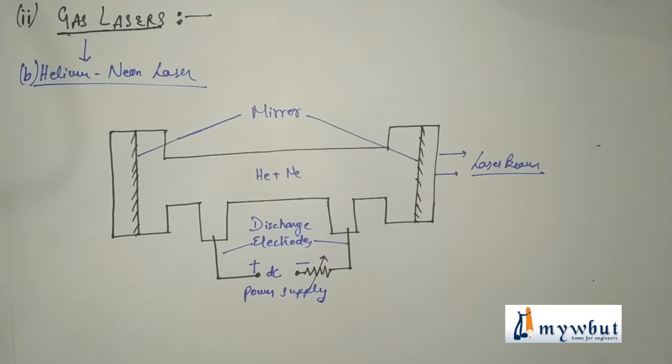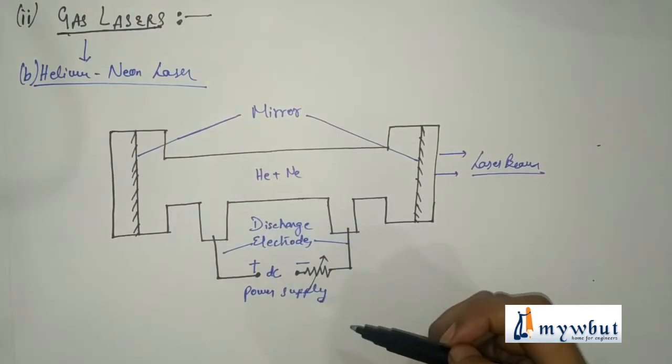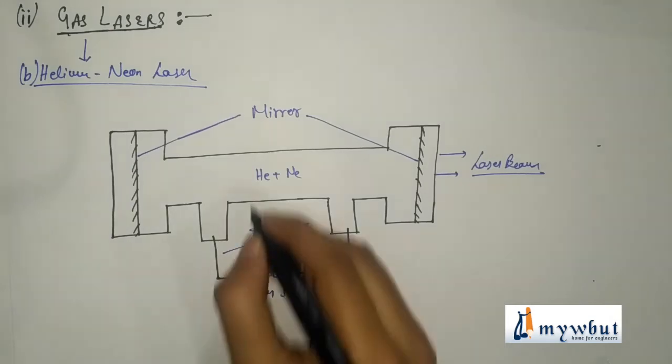The second type and the last type of laser we will study is gas lasers, under which we will specifically concentrate on helium-neon lasers. So this is the schematic representation of a helium-neon laser.